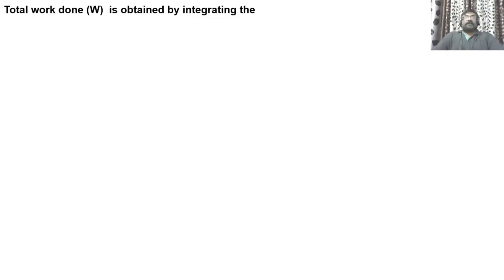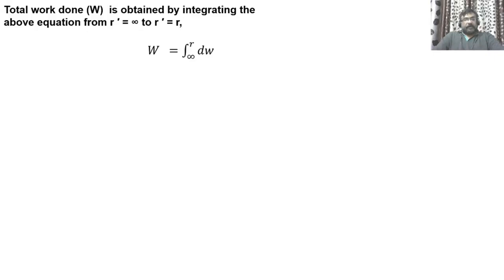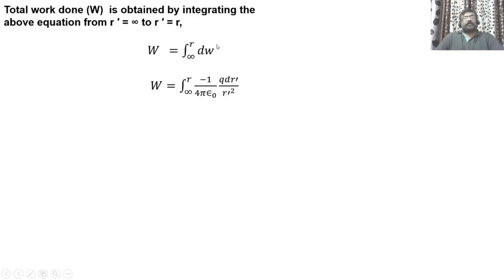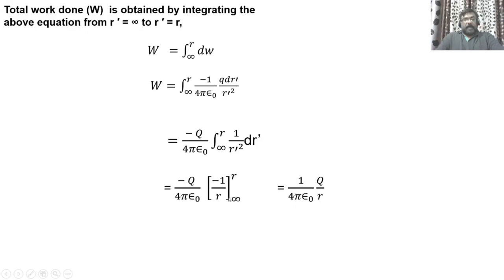The total work done to bring the charge from infinity to R is obtained by integrating dW within the limits R dash equal to infinity to R dash equal to R. That is, W equals the integral from infinity to R of dW. Substituting for dW, W equals the integral from infinity to R of negative 1 over 4π epsilon-naught times Q dR dash over R dash squared. This equals negative Q over 4π epsilon-naught times the integral from infinity to R of 1 over R dash squared dR dash. On integrating this, we get negative 1 over R, and applying the limits,